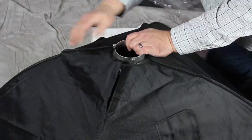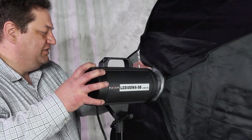Now just Velcro the four ventilation flaps together and you're ready to mount the softbox onto your light.